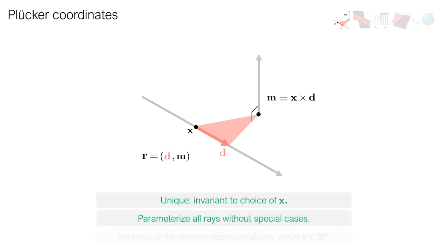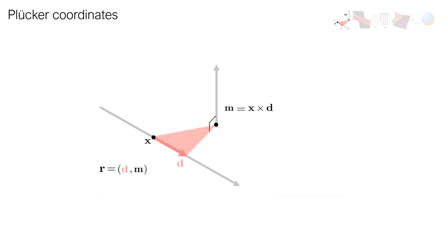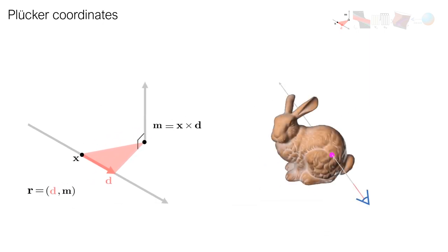However, due to their high dimensionality, the plucker coordinates could not be utilized by previous approaches, which would rely on discrete sampled representations of the lightfields. Using plucker coordinates as the input to an implicit representation of the lightfield allows us to avoid these sampling difficulties and thus to represent complete 360-degree lightfields of unbounded scenes with very little memory required.